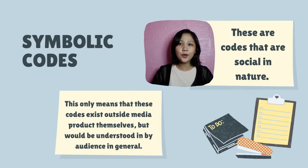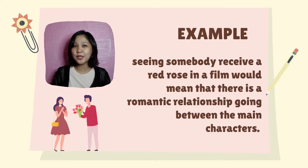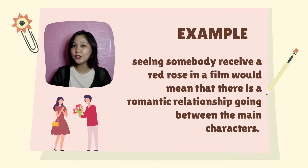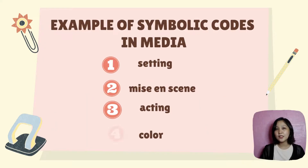Symbolic codes are codes that are social in nature. This means that these codes exist outside media products themselves but are understood by the audience in general. For example, seeing somebody receive a red rose in a film would mean there is a romantic relationship going on between the main characters — exactly similar to giving someone a red rose in real life.